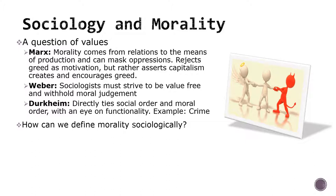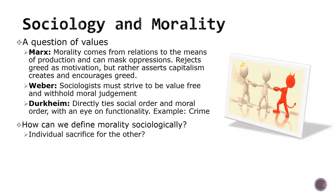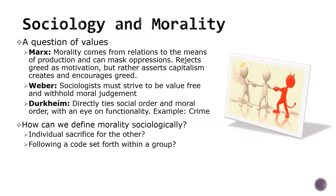These differing views on values lead us to an interesting question: how can we define morality using sociology? Holmes explores three possibilities. Perhaps goodness comes from individual sacrifice for others. Durkheim studied altruism as a way the social order functions, with sacrifice being bad for an individual but good for the overall system. Goodness might simply be following a code provided by a group to which an individual belongs. Certainly, the power of group dynamics impacts what individuals decide are good or bad.